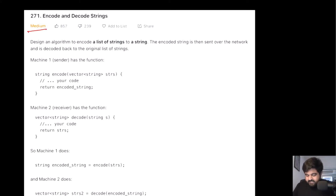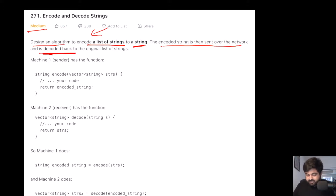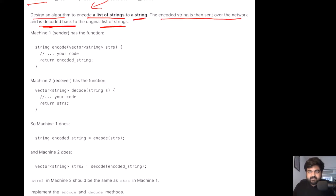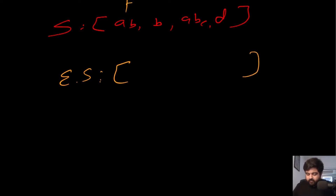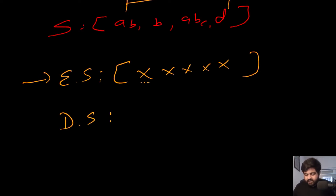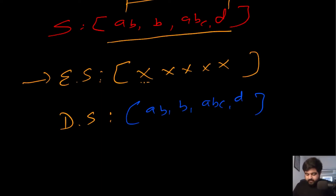This is a LeetCode medium problem. Basically, we are given a list of strings and we need to design an algorithm to encode this given list of strings into a single string. That single string is supposed to be sent over a network, and when we get to the second machine, we need to decode that given string back into the original list of strings. So we need to return both the encode and decode algorithms.